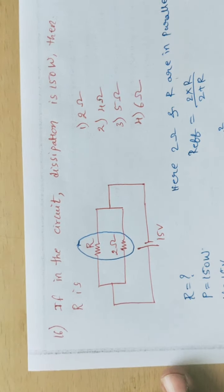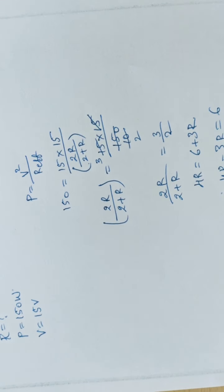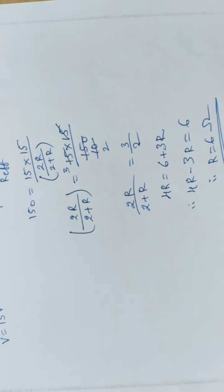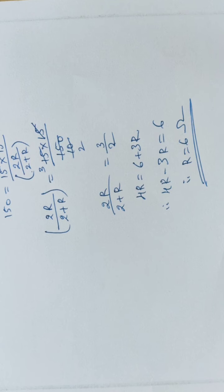Cross multiplying: 4R equals 6 plus 3R. Therefore 4R minus 3R equals 6, giving R equals 6 ohms. So in the given circuit, R is equal to 6 ohms. Almost all models in current electricity are completed. In the next class, we will start a new chapter: Magnetism and Matter.